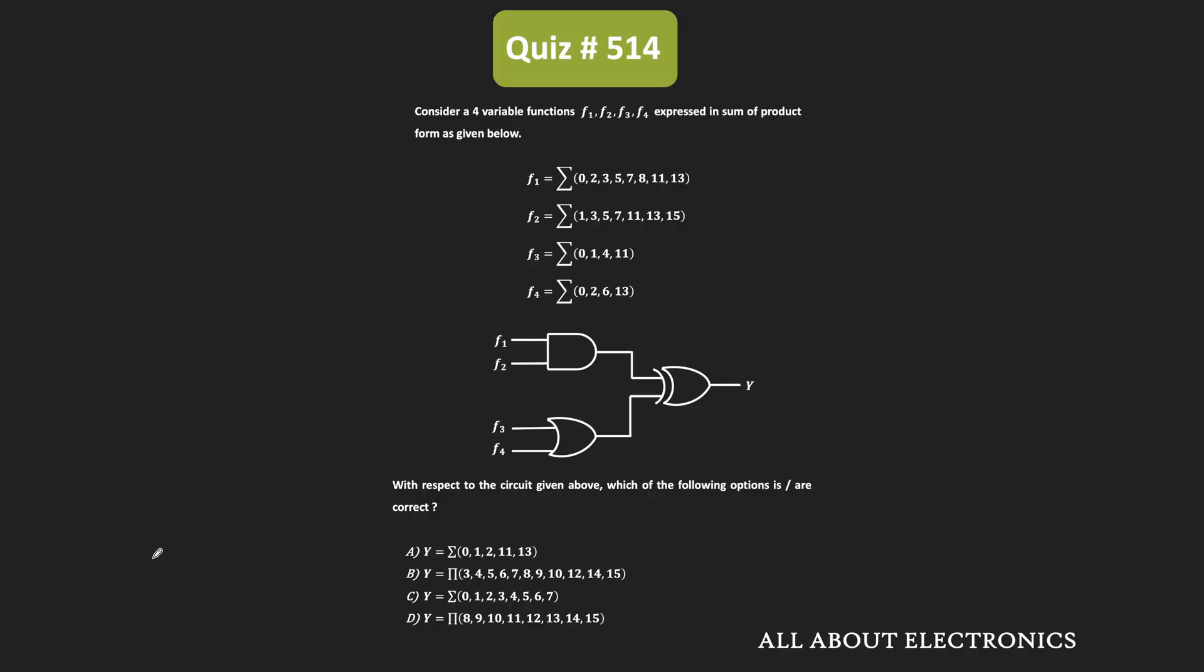Hey friends, welcome to the YouTube channel All About Electronics. So in this question, we have been given the four variable functions F1, F2, F3, and F4. And as you can see, they are represented in the sum of product form.